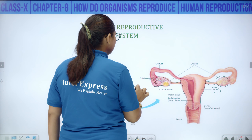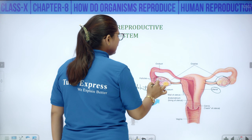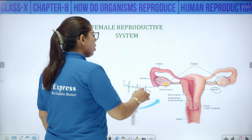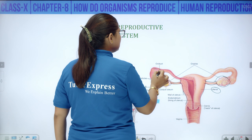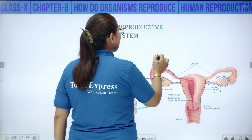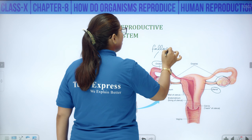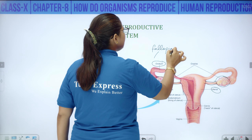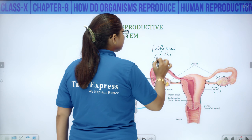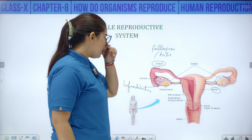There is a structure called infundibulum which holds the ovary. From here a tube emerges called the oviduct or fallopian tube. The female gamete — ova — is produced in the ovary.